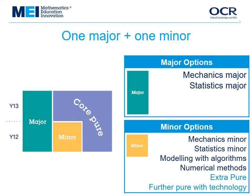There are more than two possibilities. For the major plus minor route, the major paper can be mechanics or statistics, then there is a list of six minor papers to choose from. You're not allowed to choose mechanics minor if you choose mechanics major, as the content overlaps — similarly for statistics. Also, you might struggle to teach extra-pure or Further Pure with Technology alongside a major paper, risking insufficient material for Year 12. So realistically, if you study stats major, you'd probably choose mechanics minor, numerical methods, or modelling with algorithms to go with it.